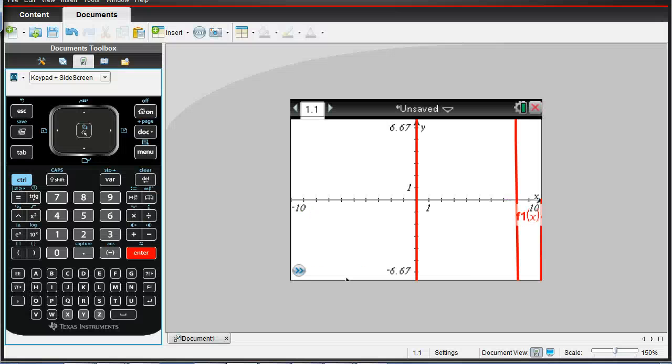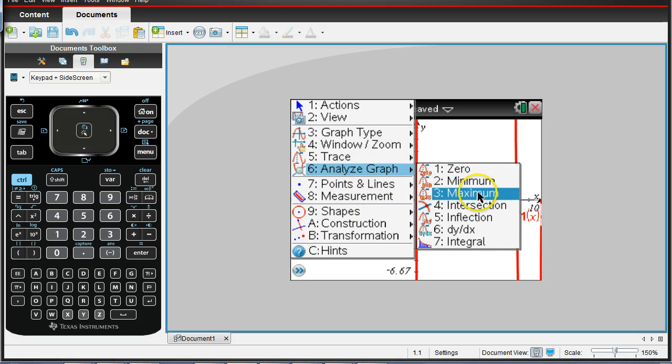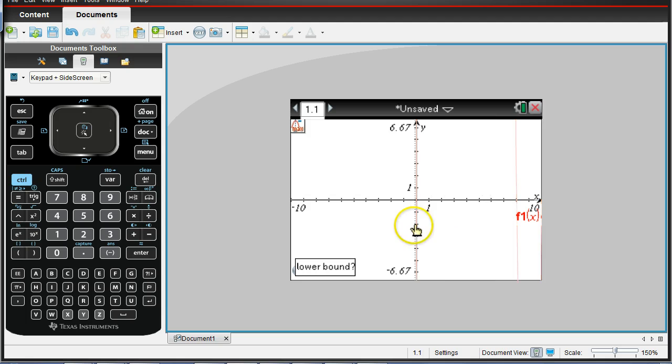So if we look back at our graph, here's how we're going to do that. Go to menu, under analyze graph, we have an option called the maximum. Now if you notice, right now my graph is blinking, yours might be doing the same. But down here, it says lower bound. So what I'm going to do is I'm going to put my finger somewhere on this line. Because I know it's somewhere between these two blinking lines that are blinking in red here. So somewhere in between there, it's going to be my maximum value. So I'm going to put my finger and click enter when I put my finger on one of those lines, or near one of those lines. It doesn't have to be right on it.